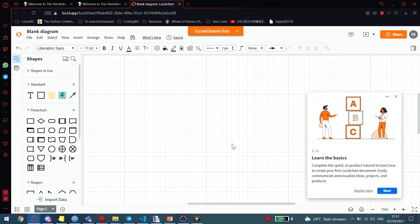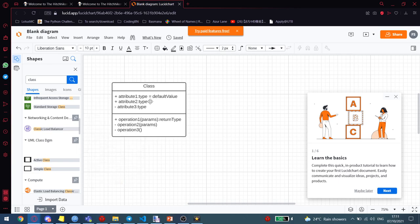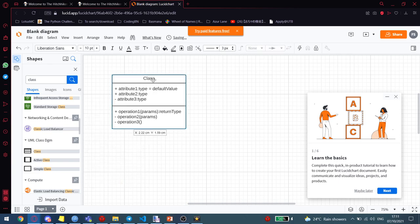I have here open Lucid Charts, and we're supposed to be drawing a class diagram. So let's go look for a class diagram. The name of the class will be Arrow. Classes should be capitalized.